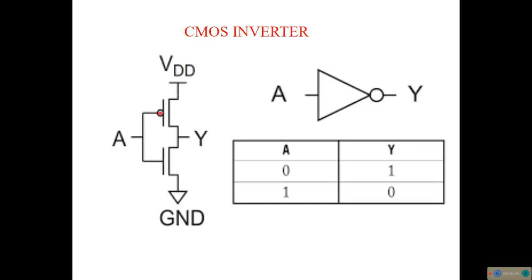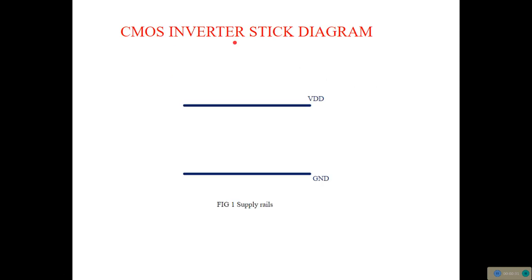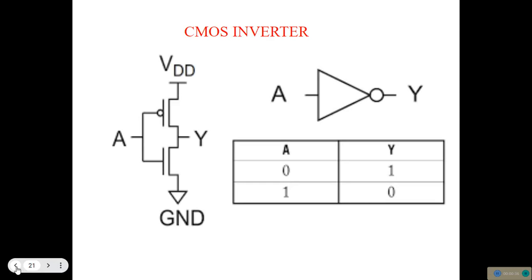Here we are having a CMOS Inverter. The term CMOS means Complementary Metal Oxide Semiconductor. Complementary in the sense, it is going to be a combination of your N-MOS Transistor and P-MOS Transistor. We could see this is a P-MOS Transistor and this is going to be your N-MOS Transistor. N-MOS Transistor is acting as a pull-down network, whereas a P-MOS Transistor acts as a pull-up network.